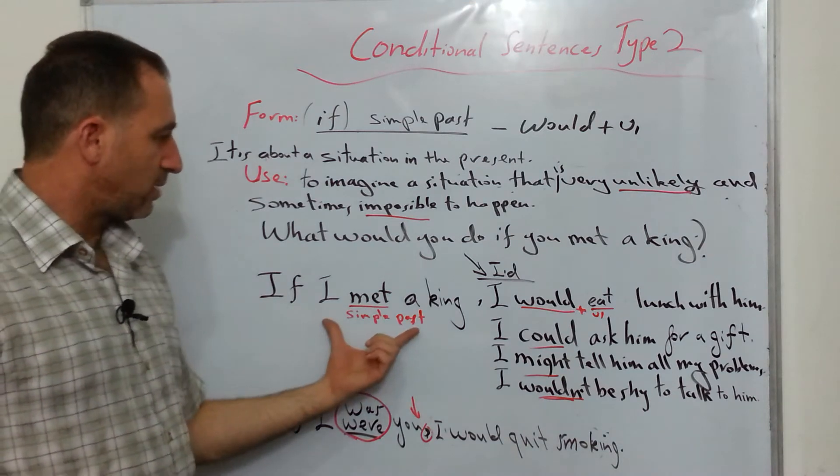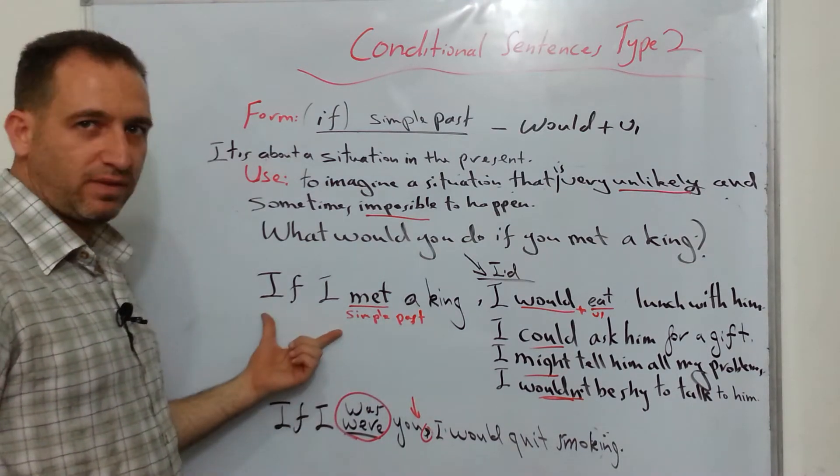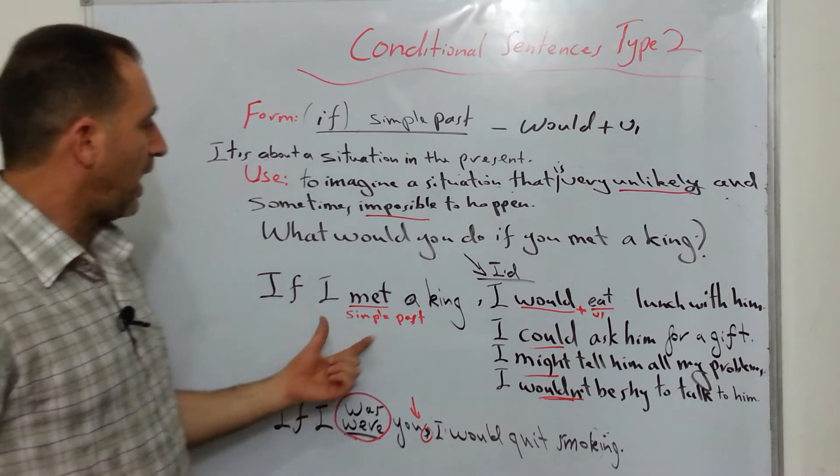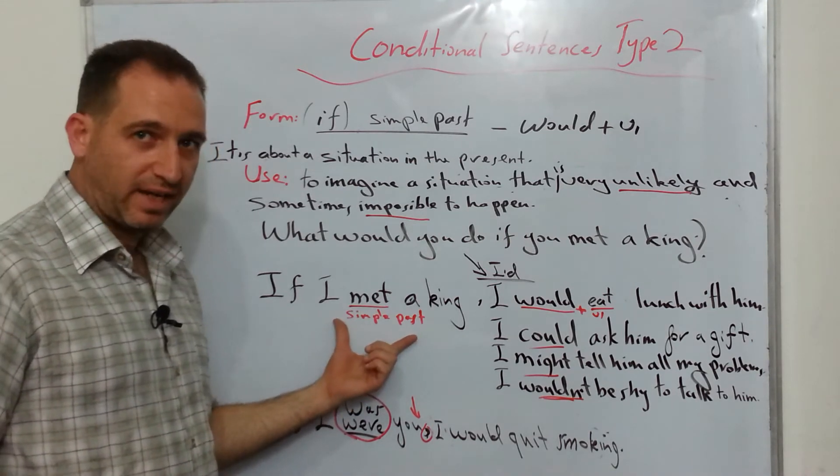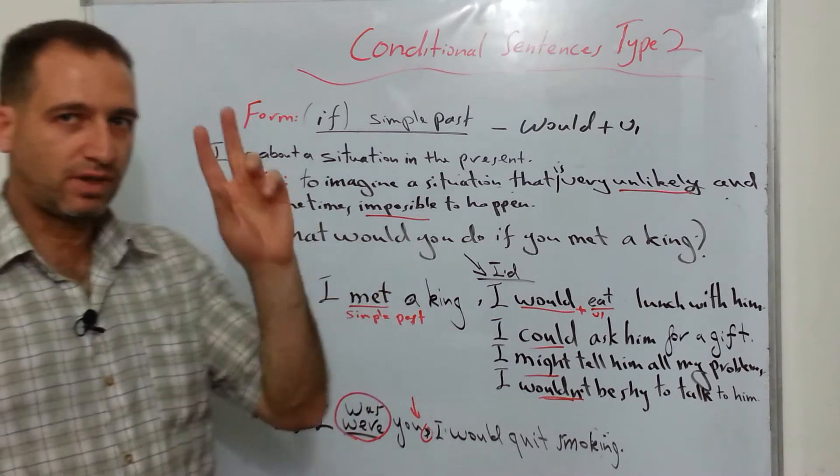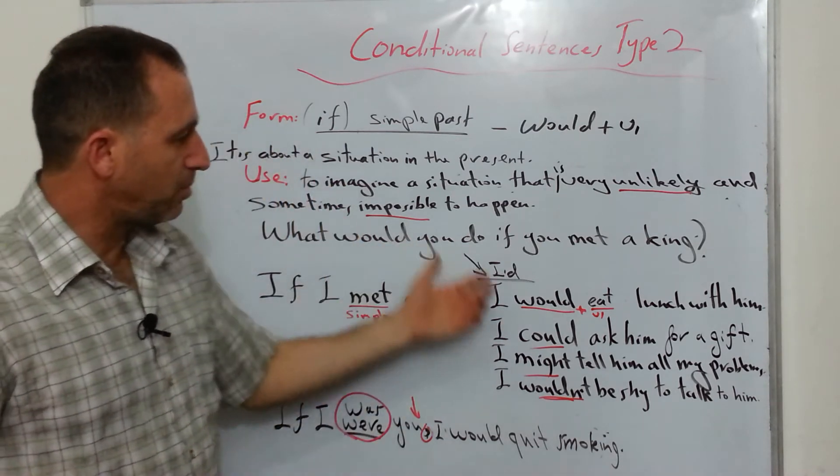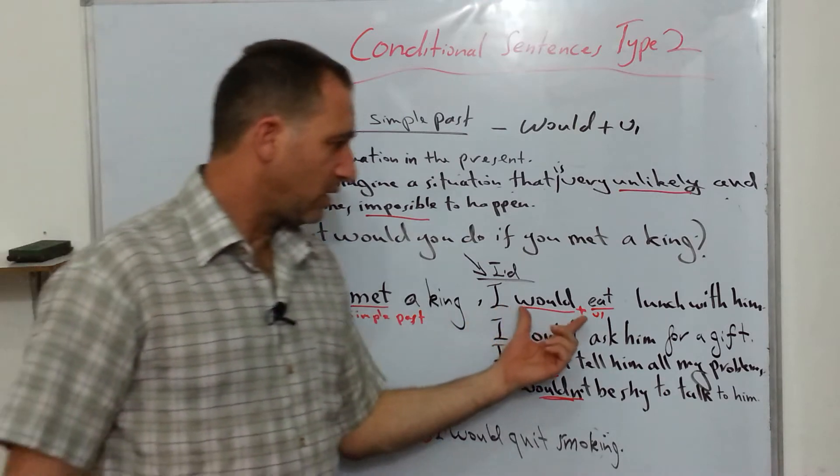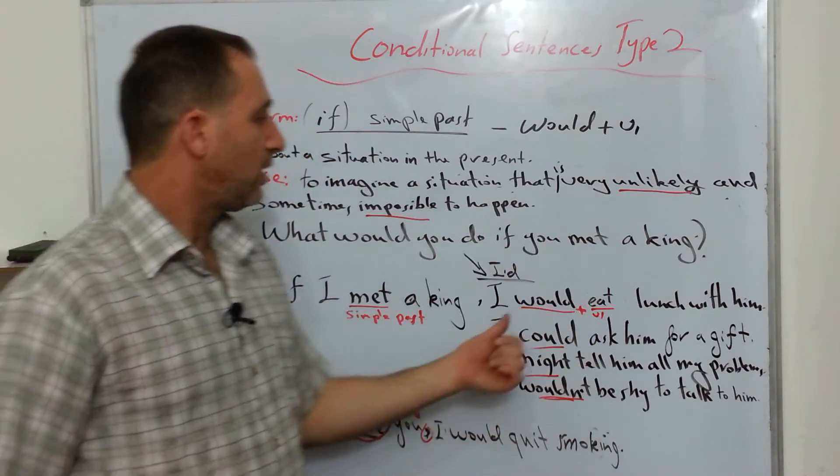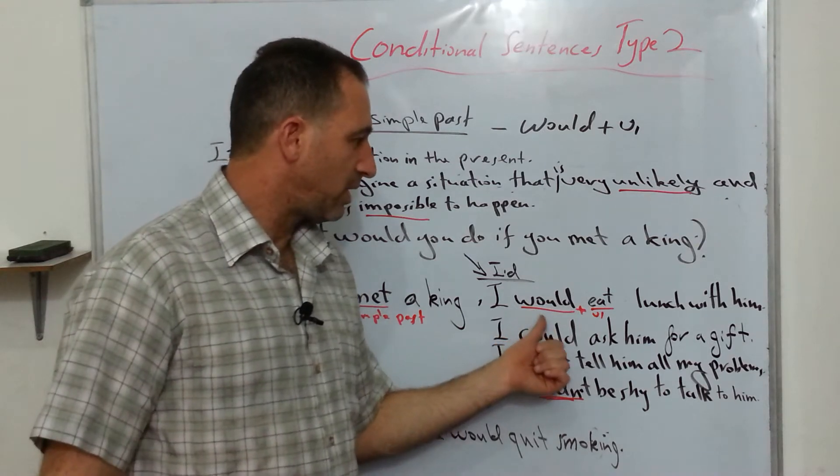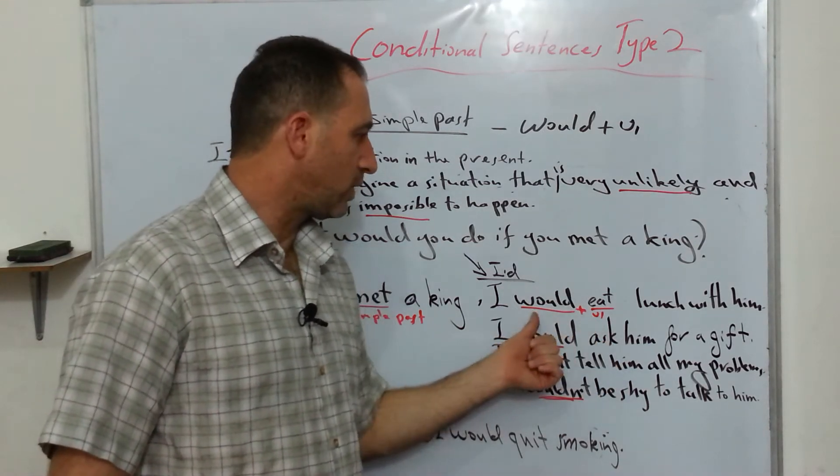This is the part, the clause that has if at the beginning and for which, or in which, in this situation I use simple past. And you know simple past means using verb 2. And in the second part, the imaginary situation that could happen, for example, in that I used would plus verb 1.